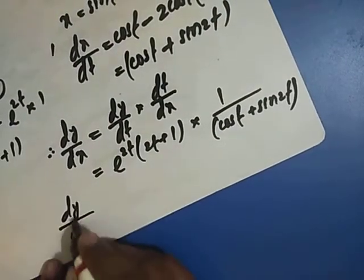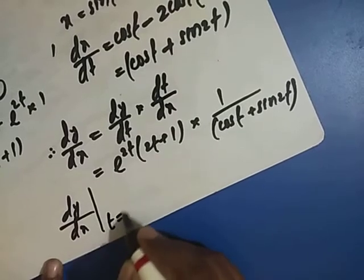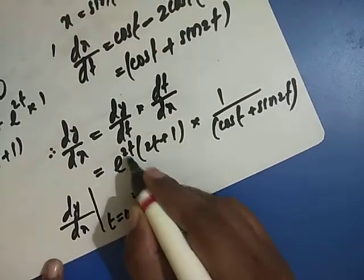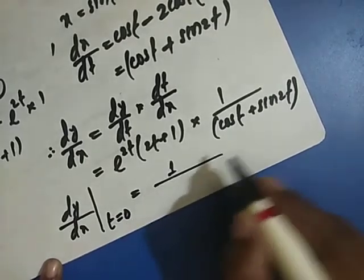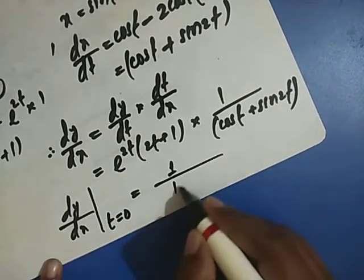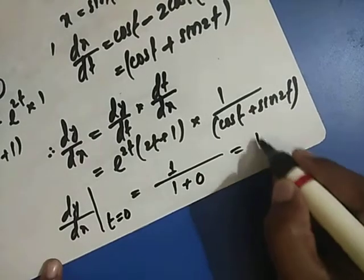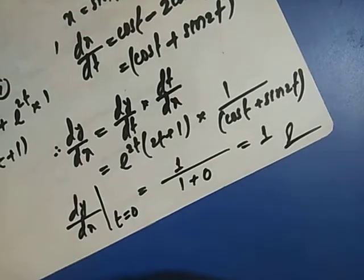Now we need to find the value at t equals 0. At t equals 0: e to the power 0 equals 1, 2t equals 0, so the numerator is 1. For the denominator, cos 0 equals 1 and sin 0 equals 0, giving us 1. Therefore, the answer is 1. I hope this video is clear to you.